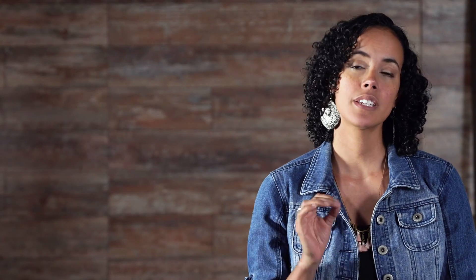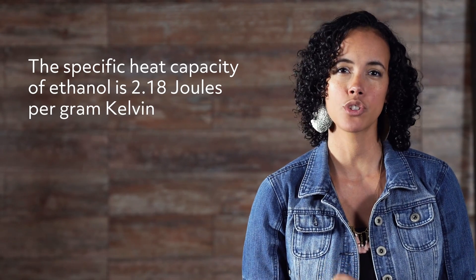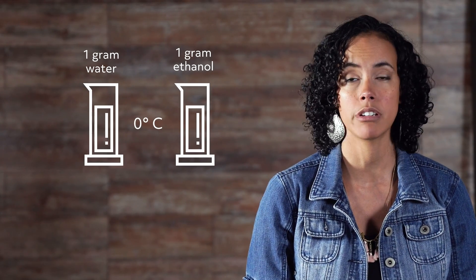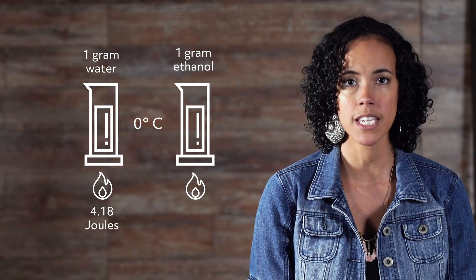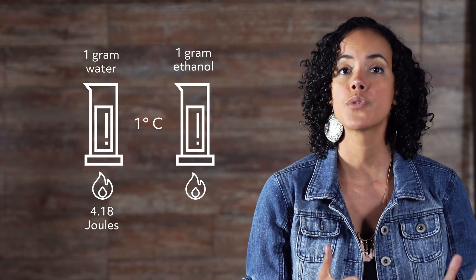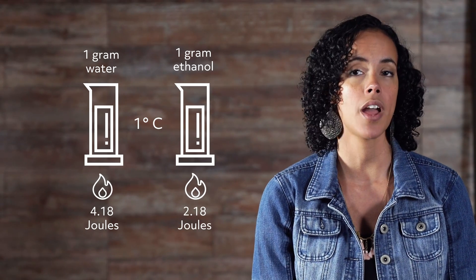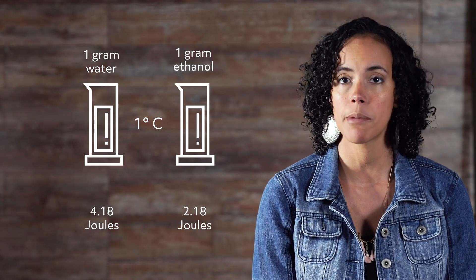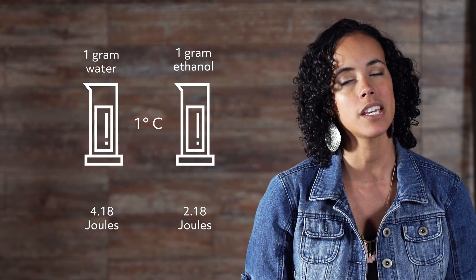For example, the specific heat capacity of ethanol is 2.18 joules per gram Kelvin, almost half of water. If we have 1 gram of water and 1 gram of ethanol, both at 0 degrees Celsius, it would take 4.18 joules of heat to raise the temperature of water to 1 degree Celsius and only 2.18 joules for ethanol. The liquids reach the same temperature but require different amounts of heat.